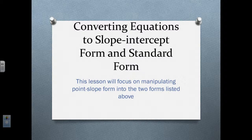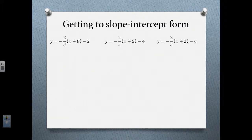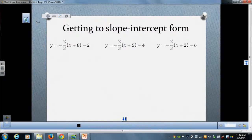This video is going to help us convert our equations to slope-intercept form and standard form. This is the follow-up to the previous lesson where we learned how to write equations in point-slope form. So what we're going to work on now is changing point-slope form into either slope-intercept form or standard form. Remember that point-slope form is y equals m times the quantity x minus x1, plus y1. Let's jump into some examples.